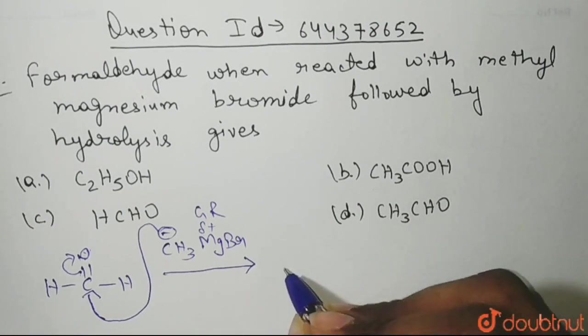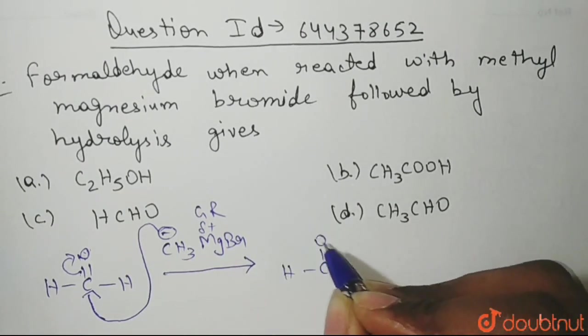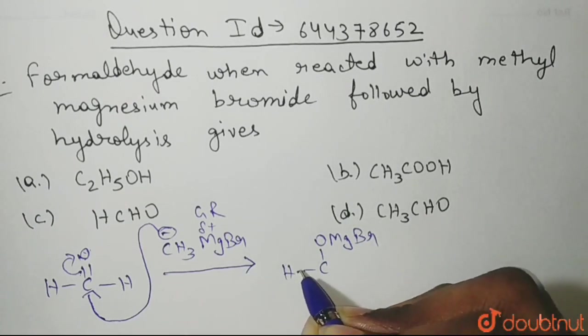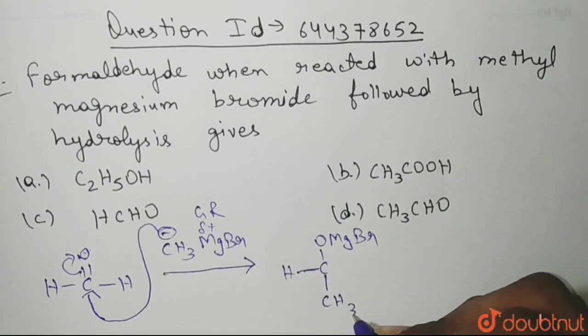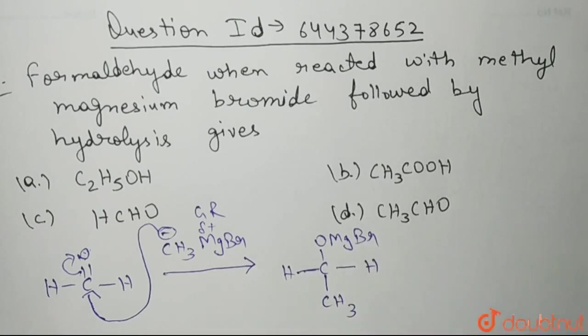So what we will get here? We will get C-O-Mg-Br. And here, you will get a CH3 group attached here and a hydrogen here.